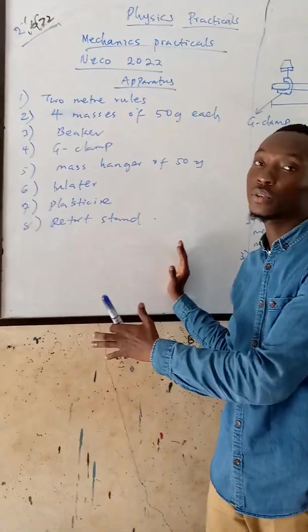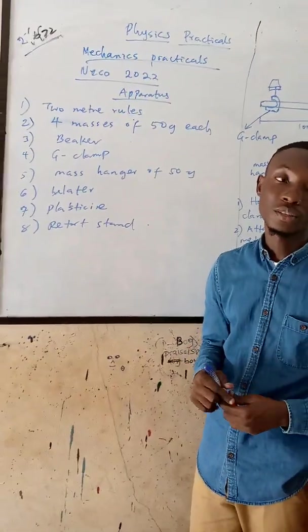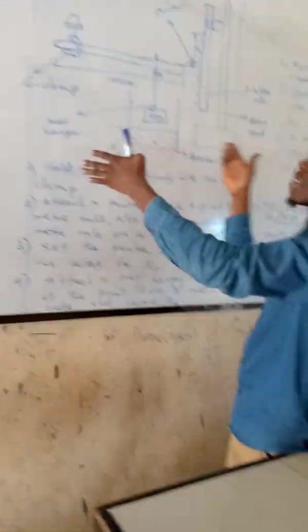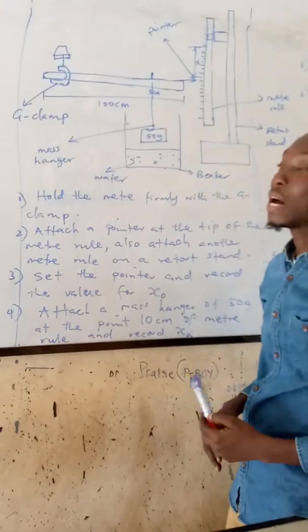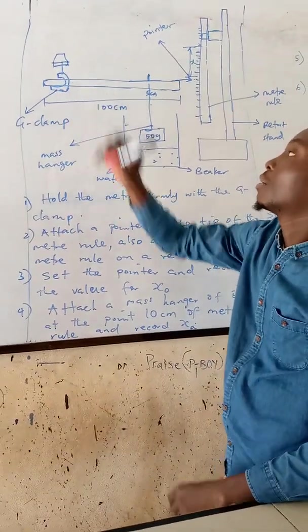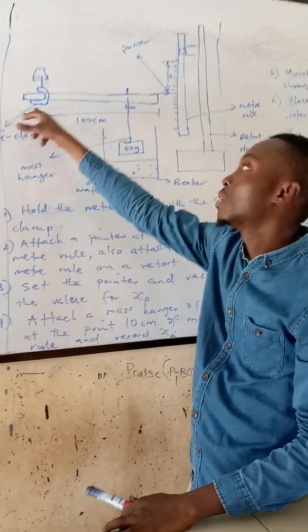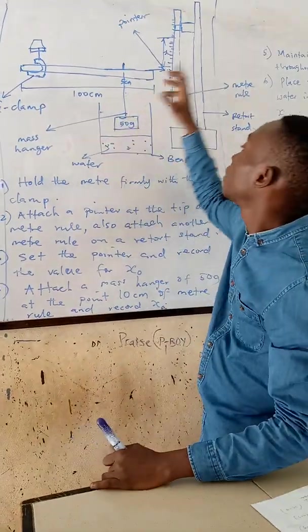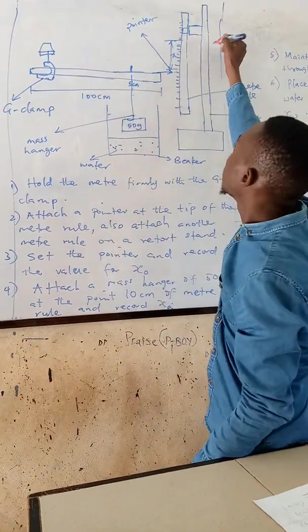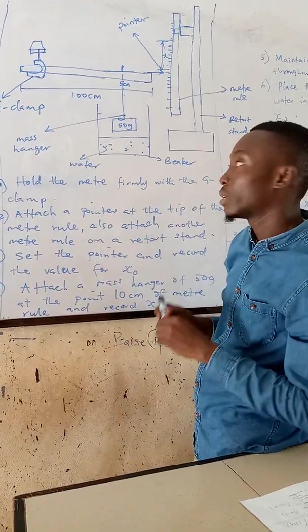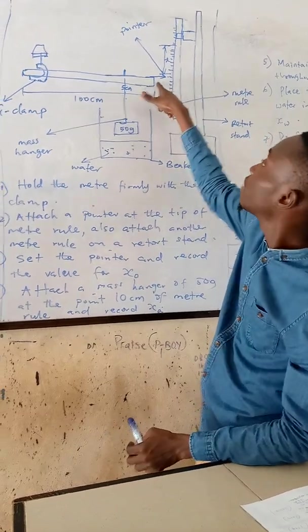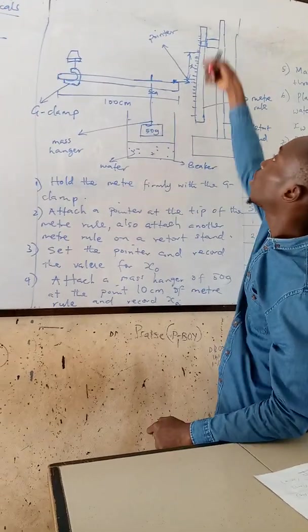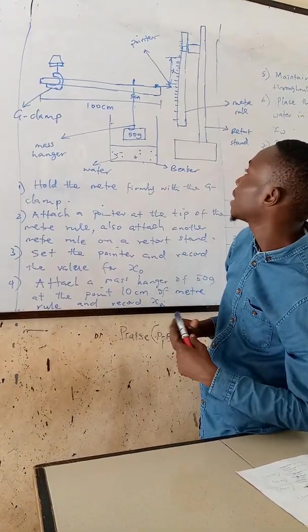So based on what they gave us, I was able to draft out a likely question that we should consider. This is an experimental setup for our practical. Here is the G-clamp. One meter rule is attached to the G-clamp firmly. Then on the other end, there is a retort stand which is kept firmly. Then we have a pointer that is placed here indicating the direction on the meter rule.